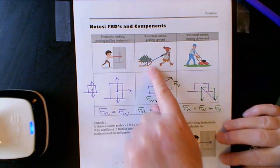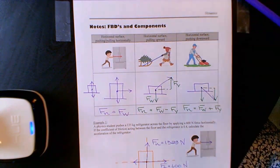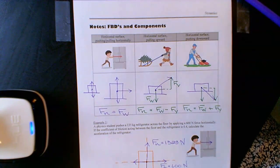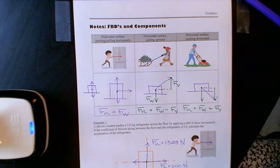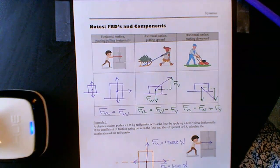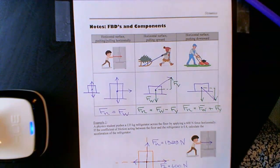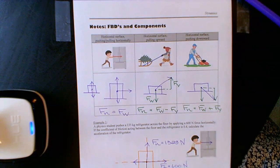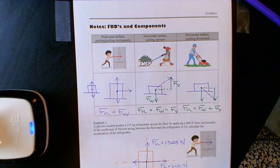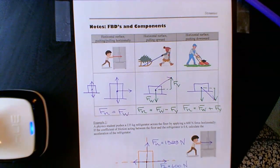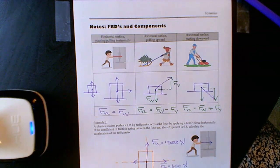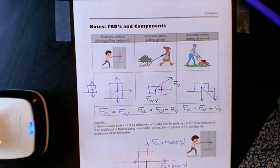Other examples similar to pulling a sled upward could include pulling a box, crate, or wagon at an upward angle. Examples similar to the lawnmower — pushing at a downward angle — include pushing a shopping cart or a baby stroller. I hope this helps, and we will see you next time.